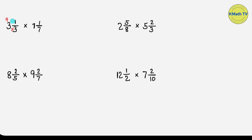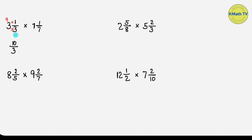Then add the numerator: plus 1. 9 plus 1 equals 10. The new numerator is 10. And copy the denominator, 3. So the mixed number 3 and 1/3 is 10/3 as an improper fraction.